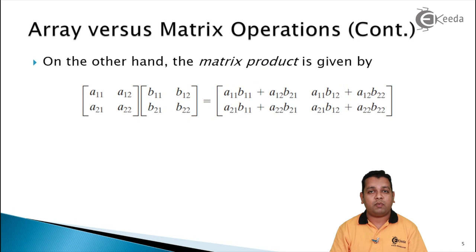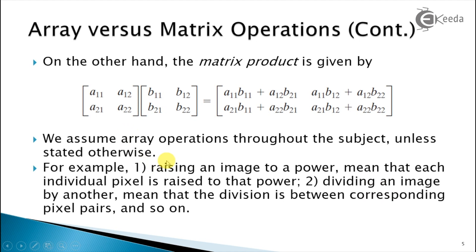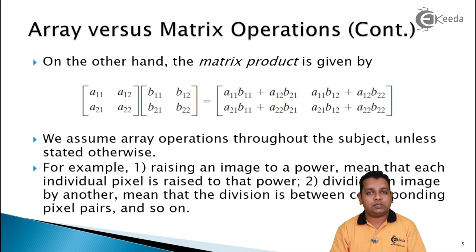For example, raising an image to a power means each and every pixel in the image sample is raised to that particular power. If the image sample is multiplied by two, all the intensity values in the image sample will be doubled. Dividing an image by another means the division is between corresponding pixel pairs — the fourth row and fifth column of the first image is divided only by the fourth row and fifth column of the second image. This is the understanding of array versus matrix operations, the first tool in digital image processing from a mathematical perspective.